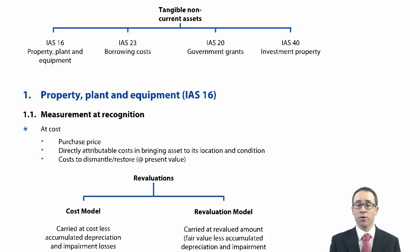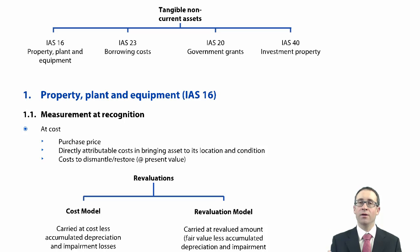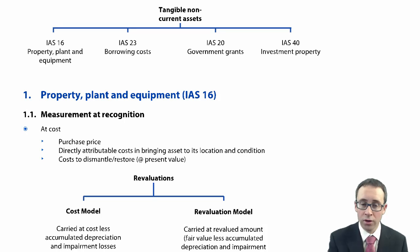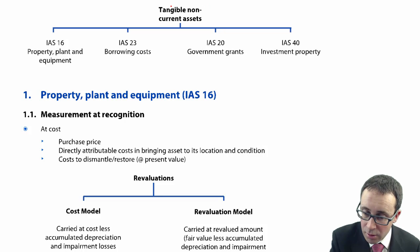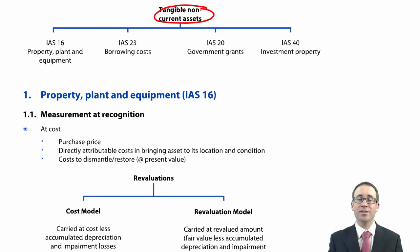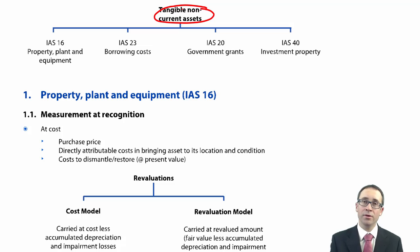The first standard we're going to look at is property, plant and equipment. We'll look at PPE in this video — IAS 16 covers all of your tangible non-current assets: items you can physically touch, such as land and buildings, plant and machinery, motor vehicles, and office equipment.